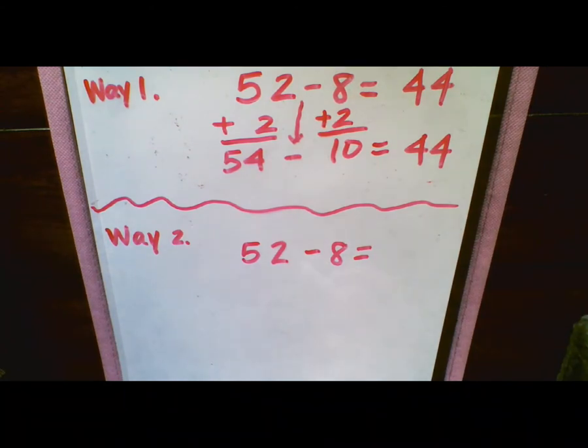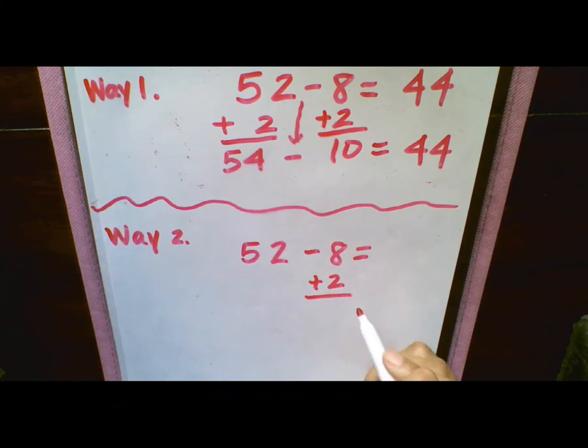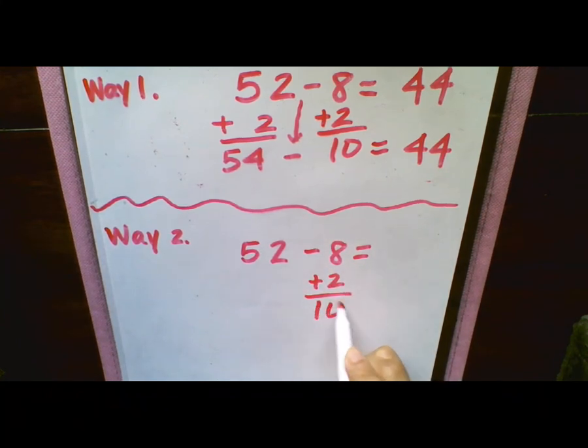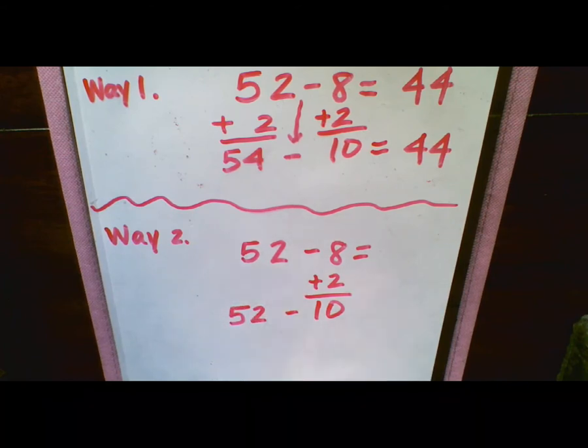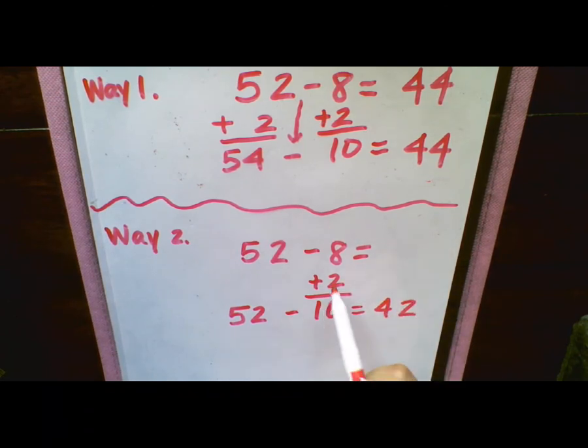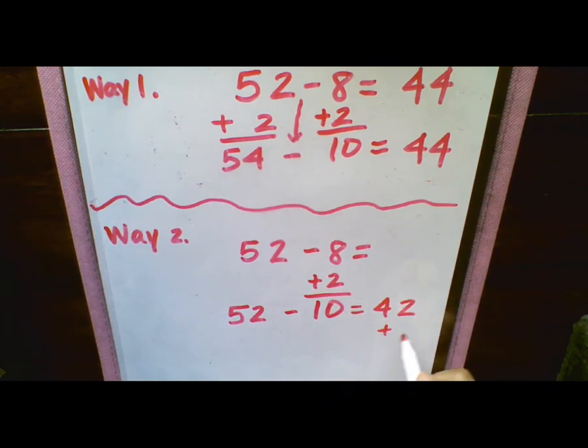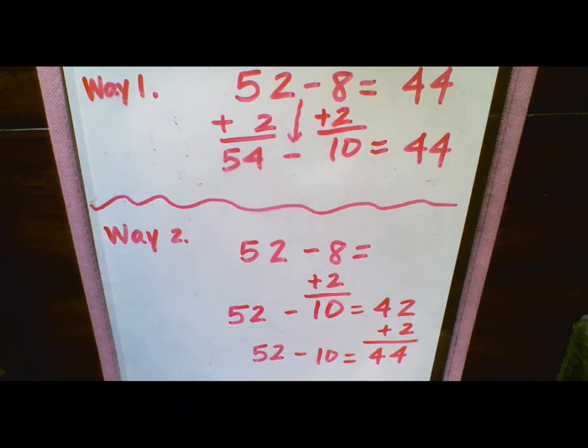Again, showing you how to do that same problem, just with a different set of steps. We are going to, again, we know that we need to add 2 here. So we're just going to add it here. 8 plus 2 is going to give us 10. We're going to bring that subtraction sign down. So now we have 52 minus 10. And that's going to give us 42. But remember, we added 2 here to our one-digit number. So now we need to add it to our sum. So 42 plus 2 is going to give us 44. So 52 minus 10 equals 44.